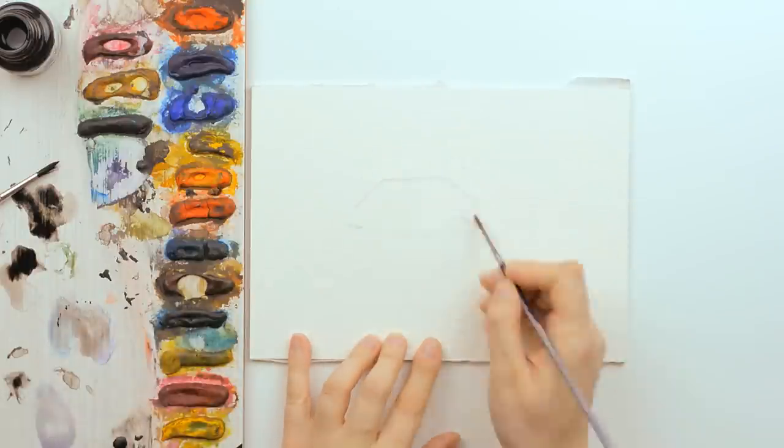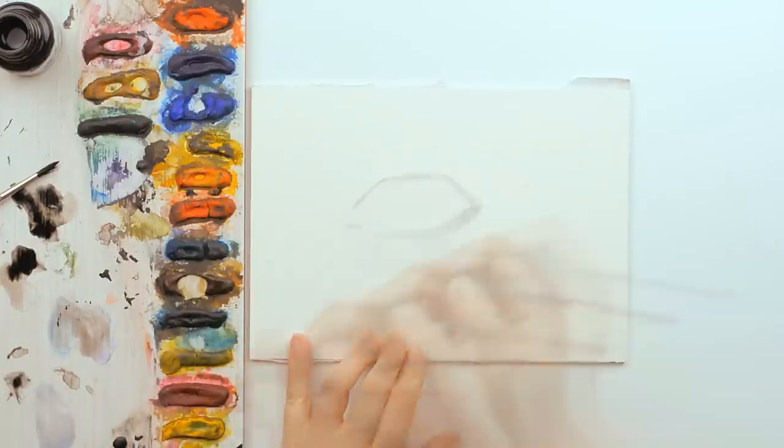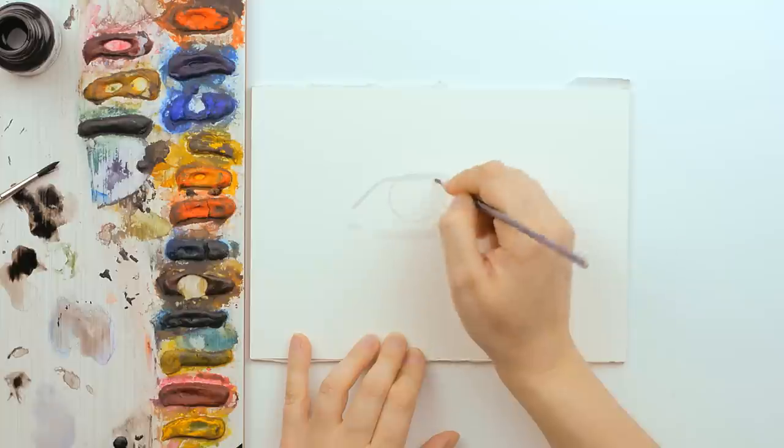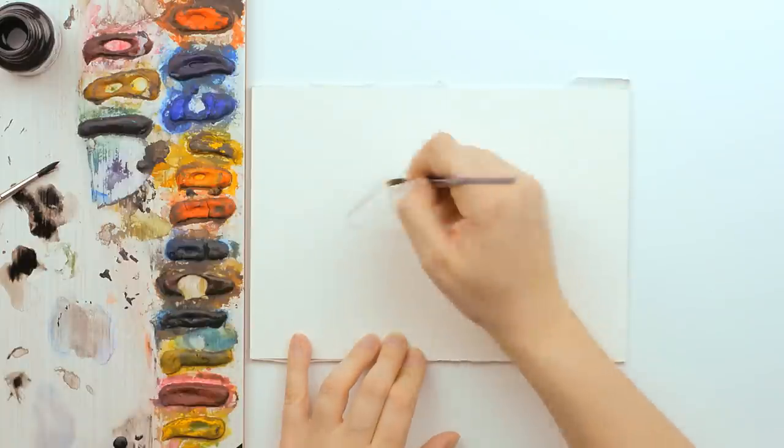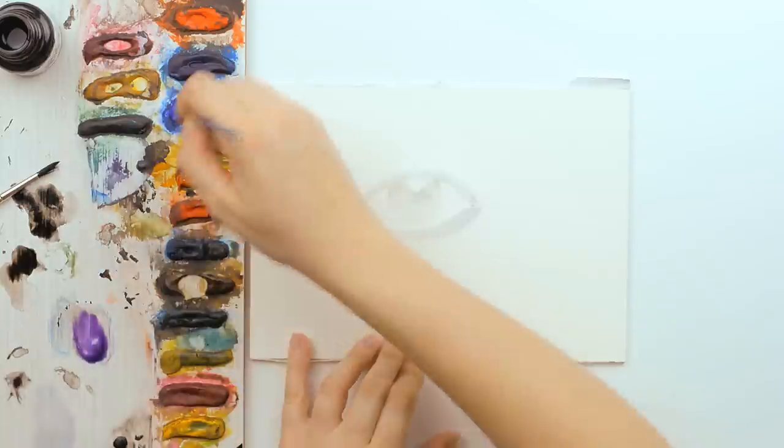As always, we start with the transparent layers. You can use a lot of water for this stage and then you can add more and more colors until the end when you have to put the accents with black ink or a darker color if you want.